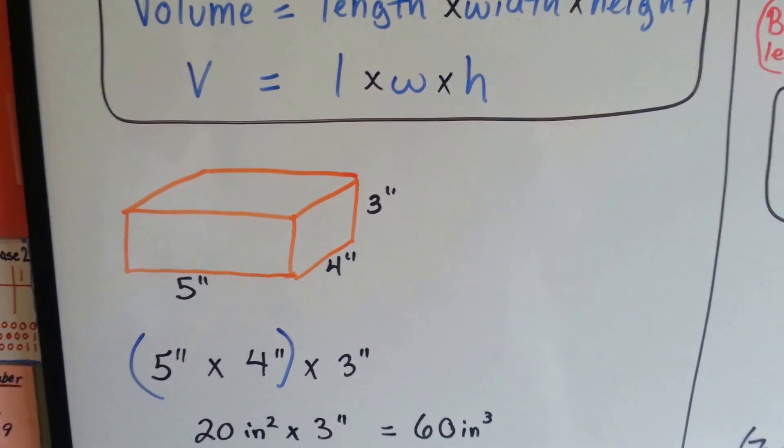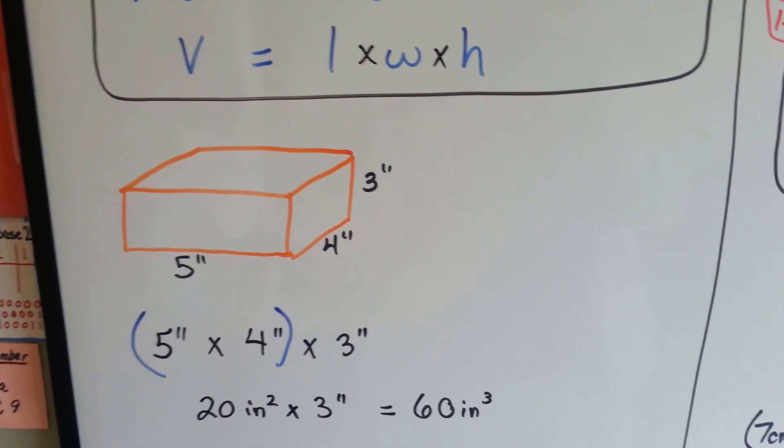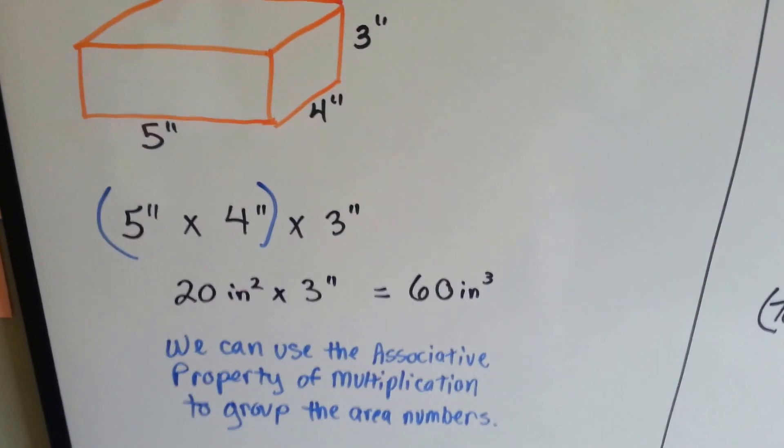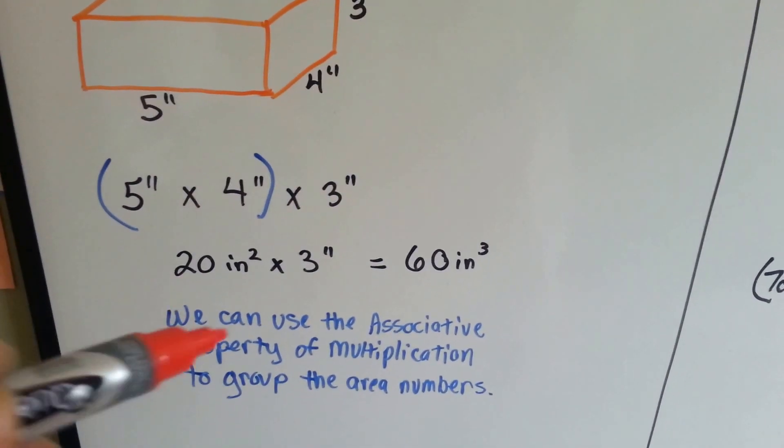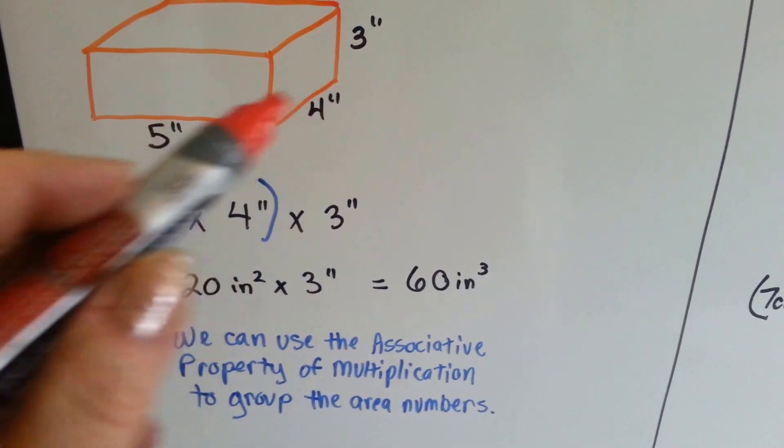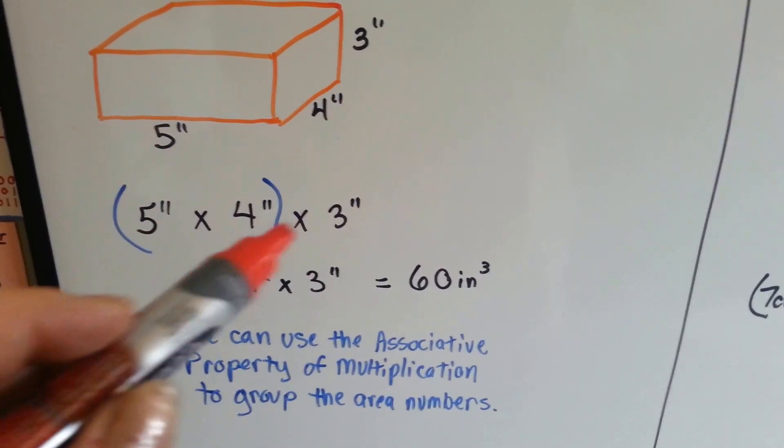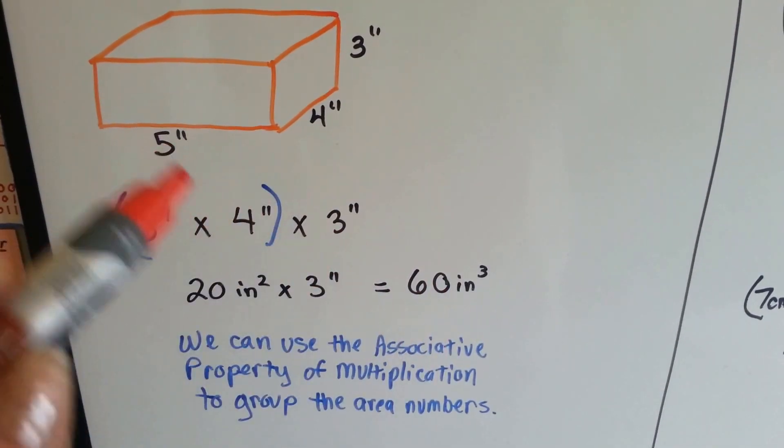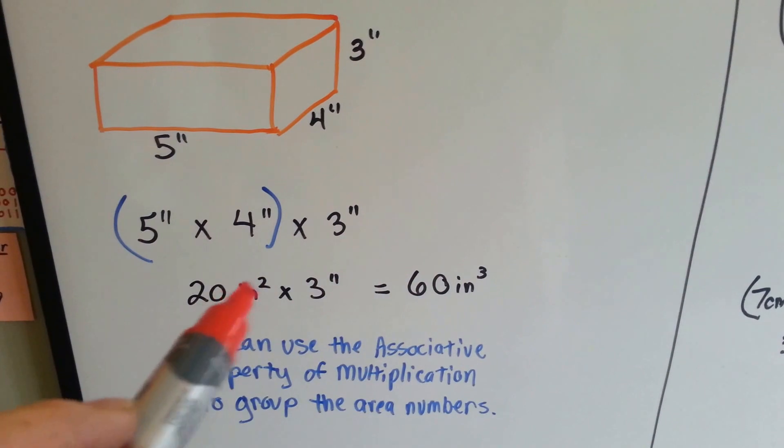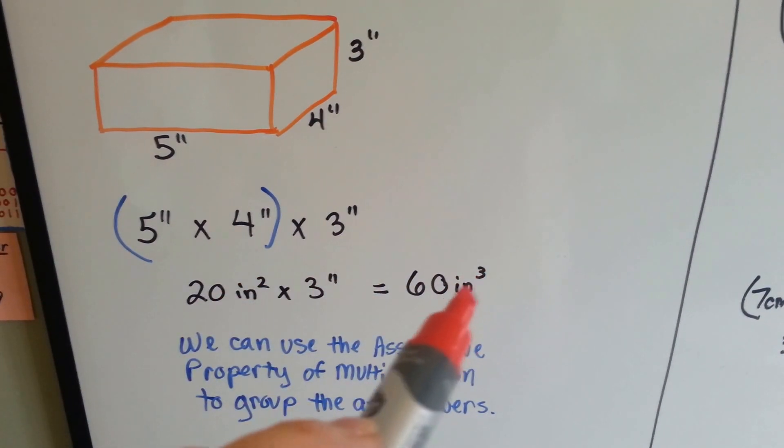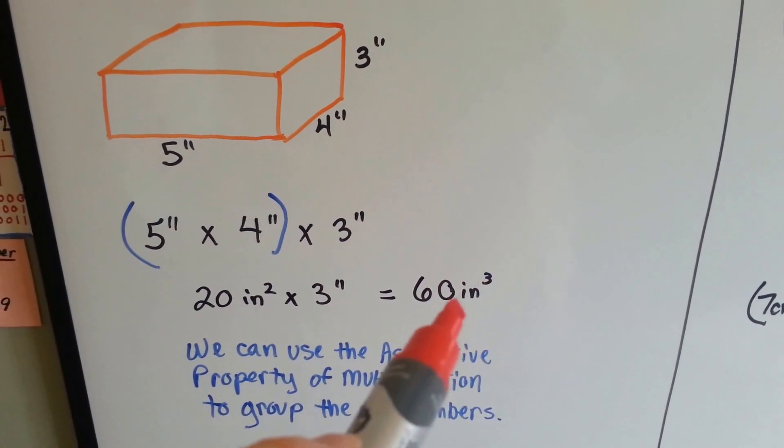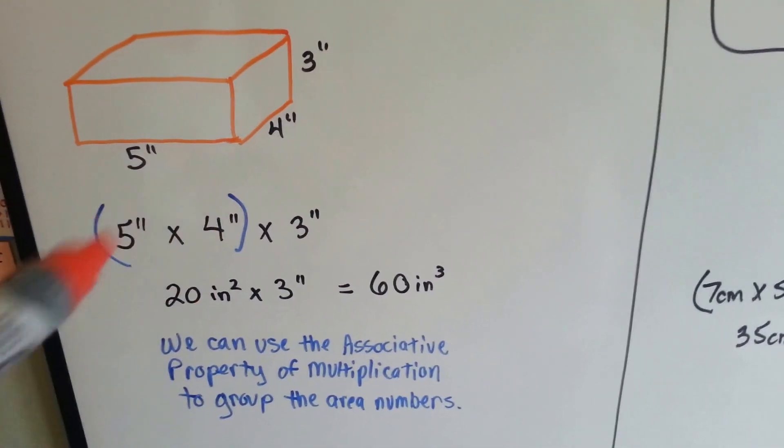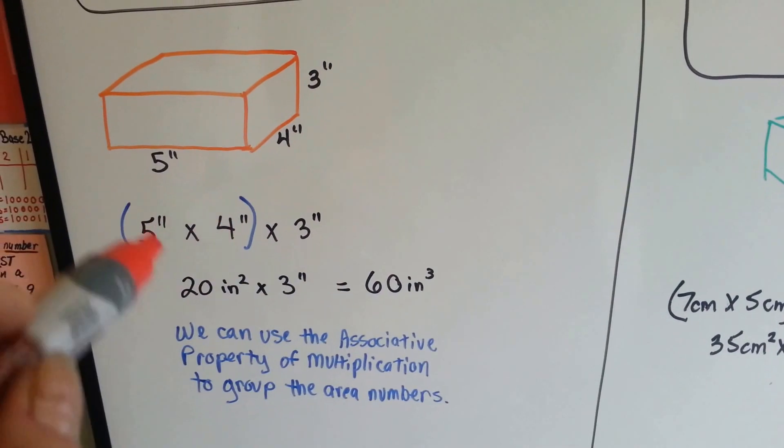If we had a box like this orange box that was 5 feet across, 4 feet back, and 3 feet high, we could group the 5 and the 4 together because that would be the area numbers for the flat bottom. 5 times 4 is 20 times 3. 20 times 3 would be 60. And make sure you put the inches in and you put whether it's cubed. Is it centimeters cubed? Inches cubed? It's very important that you label them. That's grouping together the base area.